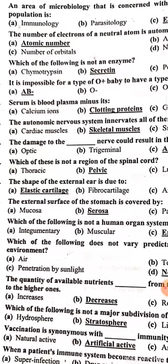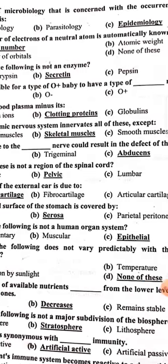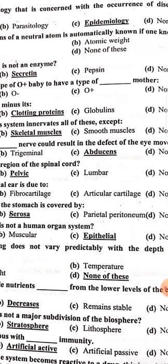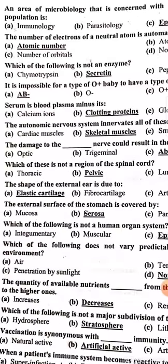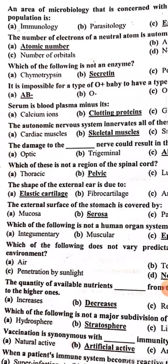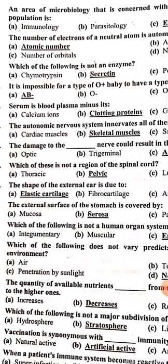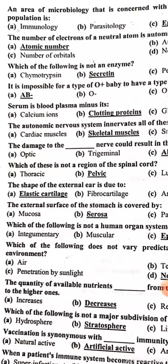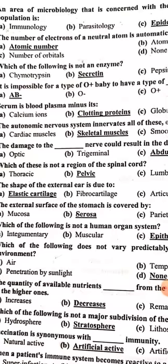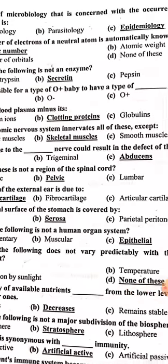It is impossible for a type O baby to have a type AB negative mother. Serum is blood plasma minus its clotting proteins.